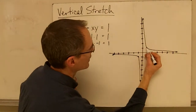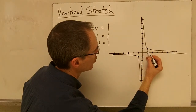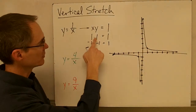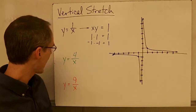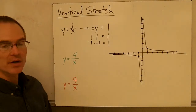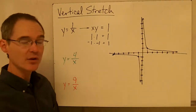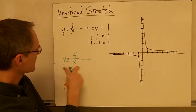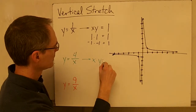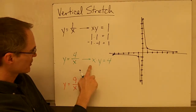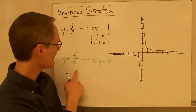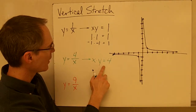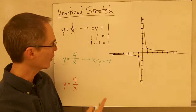The corner points are always exactly one unit away from each one of the asymptotes for the parent function. Now let's take a look at the inverse variation function with a vertical stretch of 4. If I rewrite this as x times y equals 4 — multiplying both sides of the equation by x — I can see that in this function, the relationship between x and y is that x times y always has to be equal to 4.